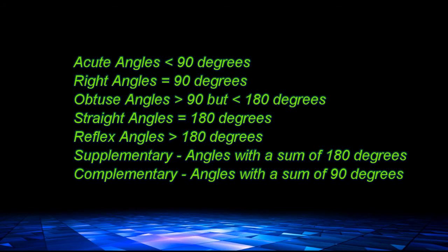So in review: an acute angle is any angle measuring less than 90 degrees. A right angle is exactly 90 degrees. An obtuse angle is greater than 90 degrees but less than 180. A straight angle is exactly 180 degrees. And a reflex angle is greater than 180 degrees. Angles that are supplementary have measures with a sum of 180 degrees, and complementary angles are two angles with a sum of exactly 90 degrees.